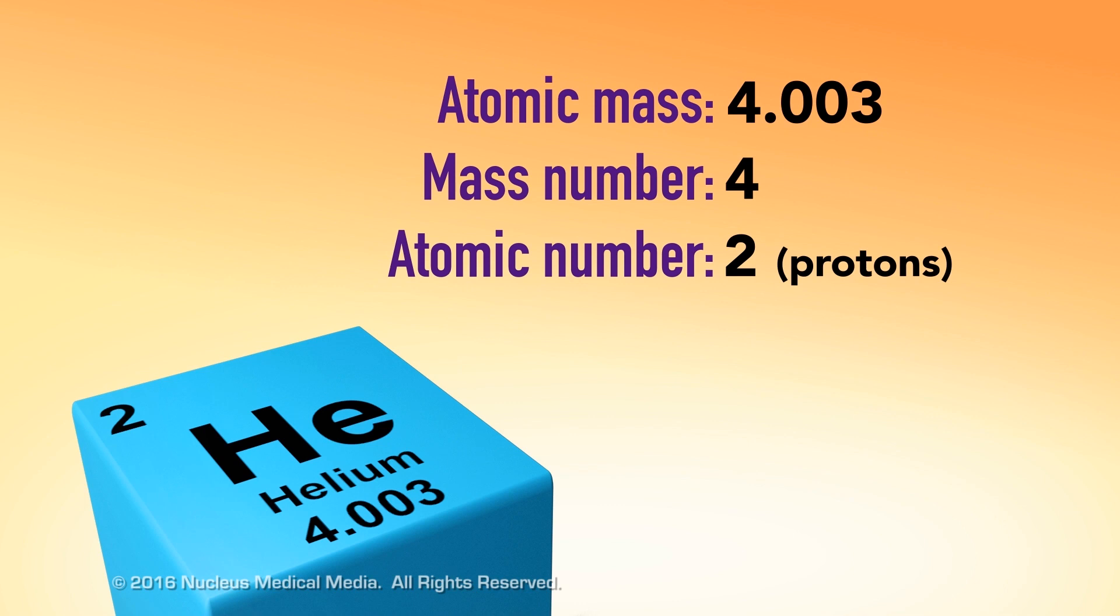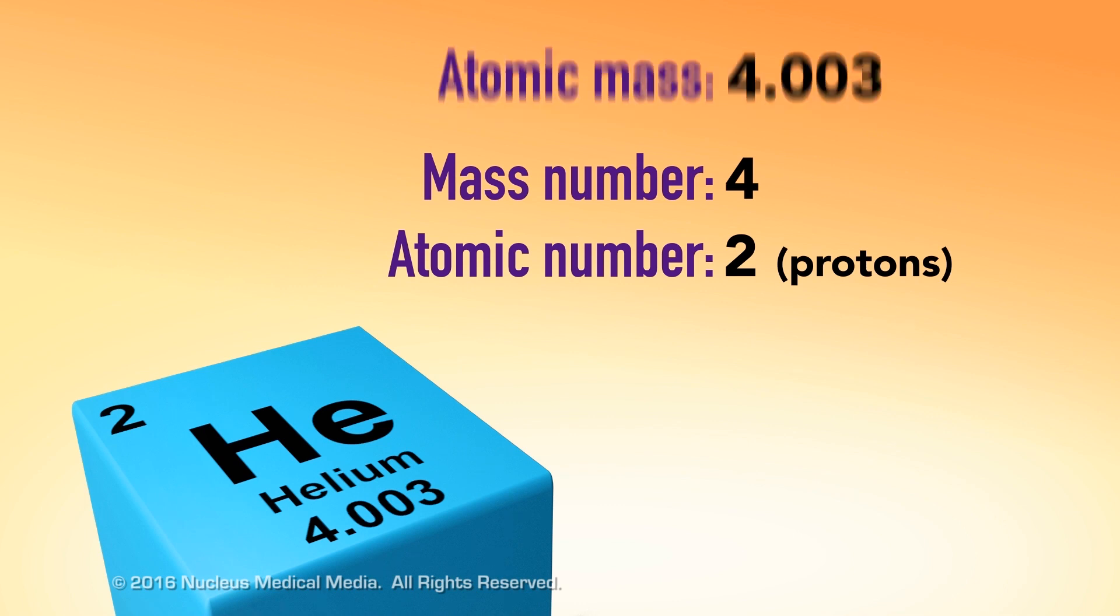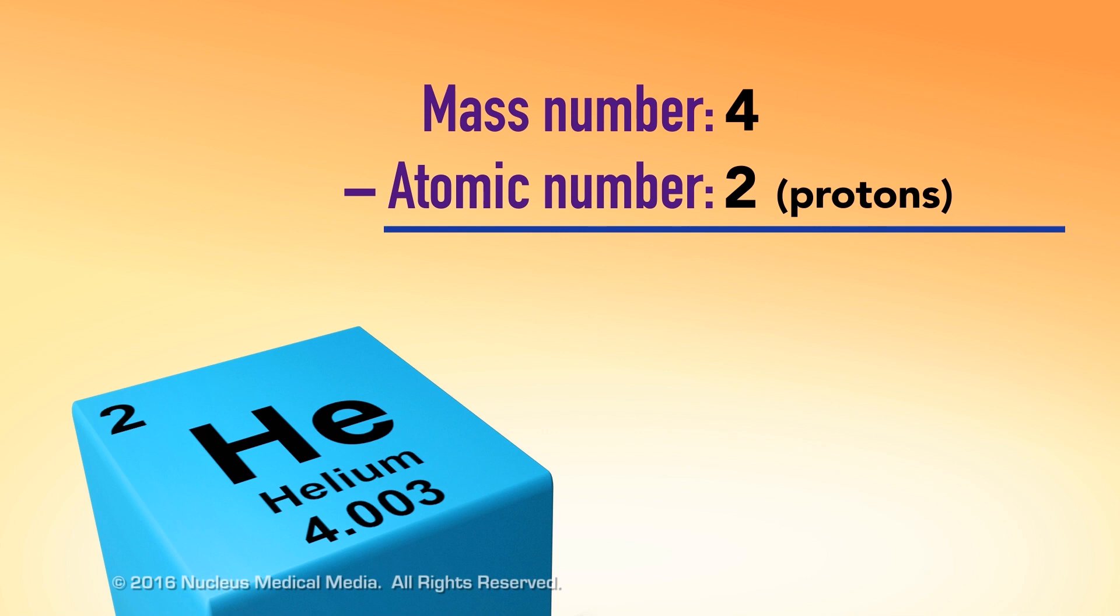which means it has 2 protons. Now, we can subtract the atomic number from the mass number to see that the most common isotope of helium has 2 neutrons.